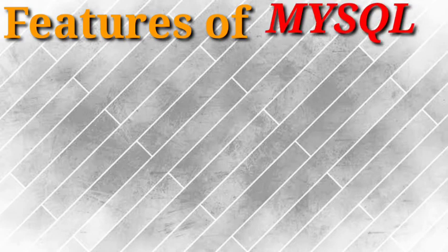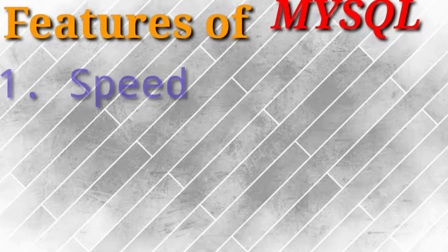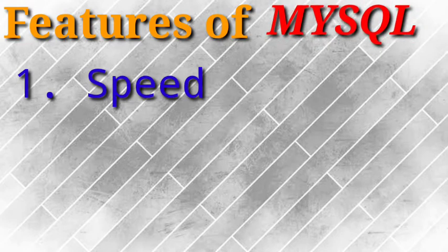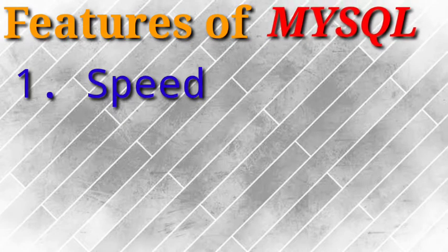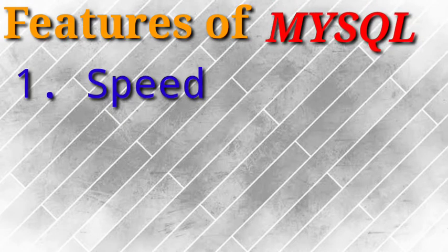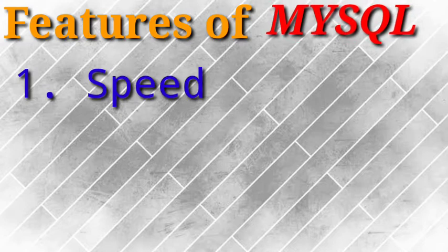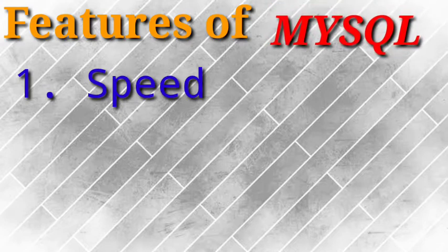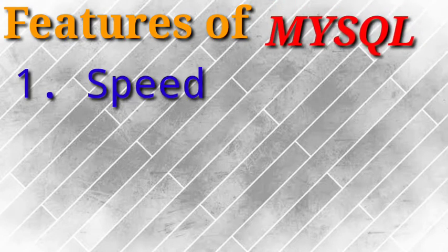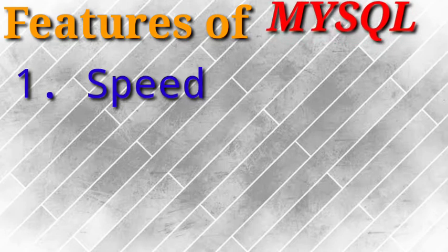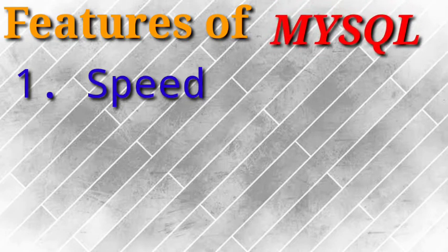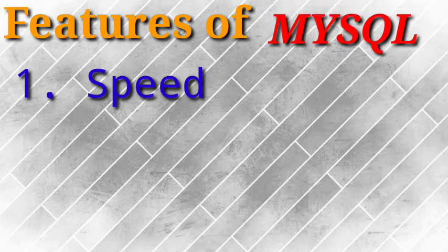Now let us discuss some key features of MySQL. The first key feature is speed. MySQL runs very fast if the server hardware is optimal — meaning the hardware devices used in the computer acting as a server meet the required specifications for storing and delivering the database. If the hardware meets those requirements, MySQL runs very fast.